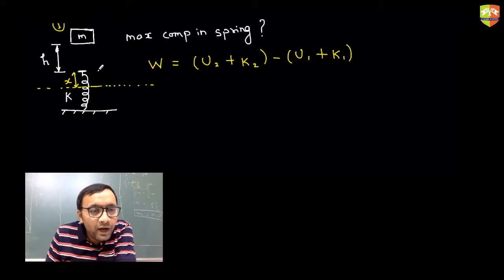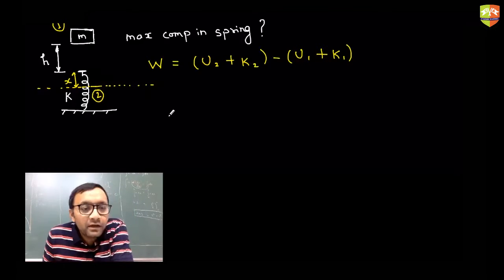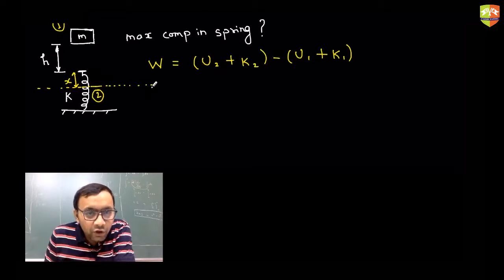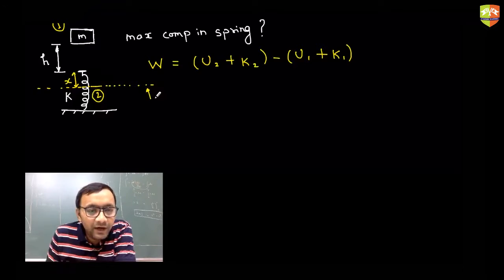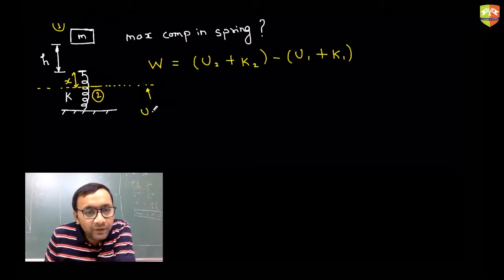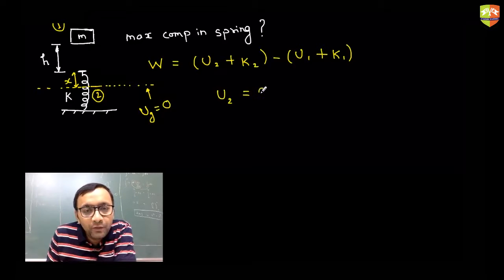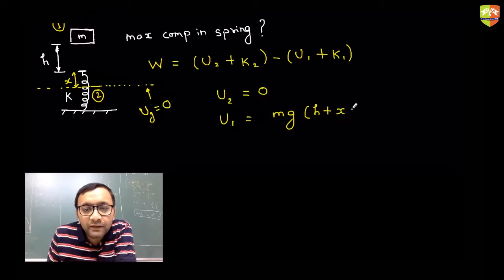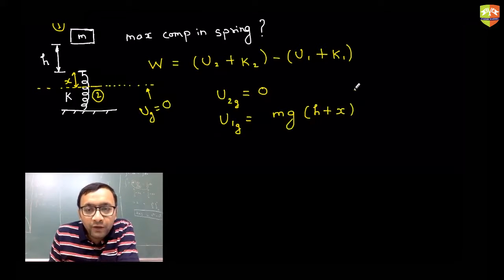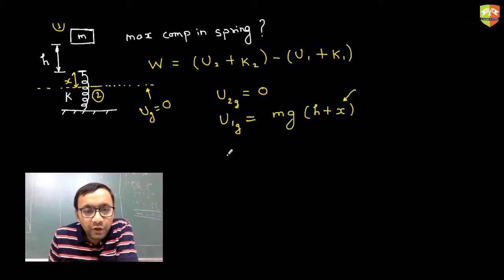I'll draw a horizontal line and say the line that passes through the maximum compression point represents gravitational potential energy equal to zero. So U2 gravitational automatically becomes zero. U1 gravitational will be equal to Mg times (H plus X) — I'm talking about gravitational potential energy. Many of you might not have taken X while finding the gravitational potential energy.